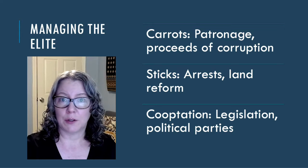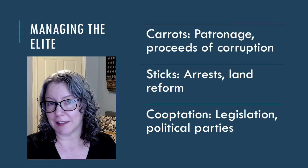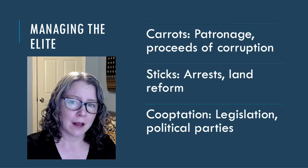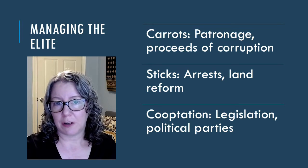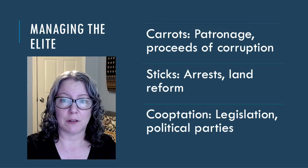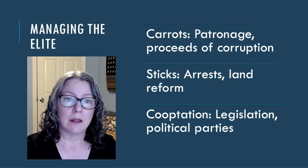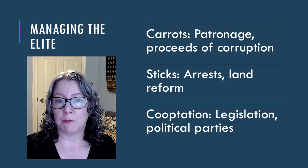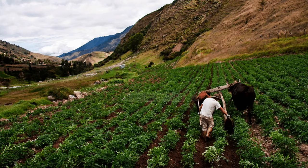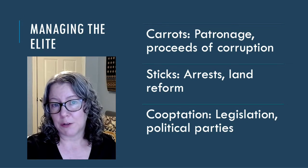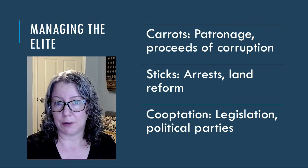Dictators are also sure to arrest elites — or, as in the case of Russia, poison them — who go too far in criticizing the government. Direct repression, though, is not the only way that dictators limit the power of their nobles. They can also appropriate or redirect their assets. For example, Venezuela under Hugo Chavez in the early 2000s expropriated private property as part of a land redistribution effort.